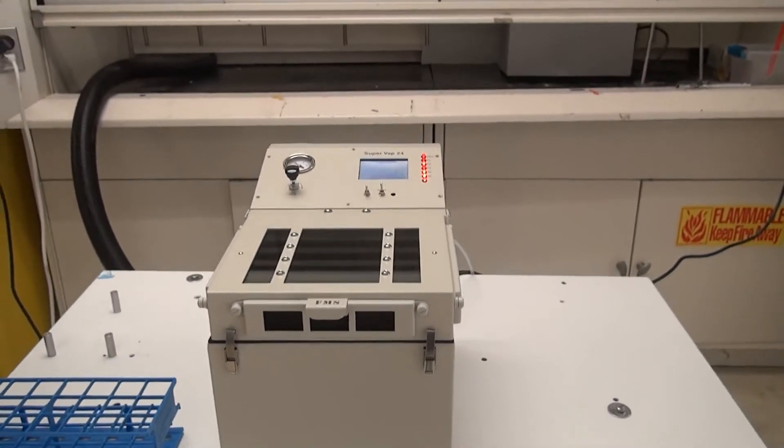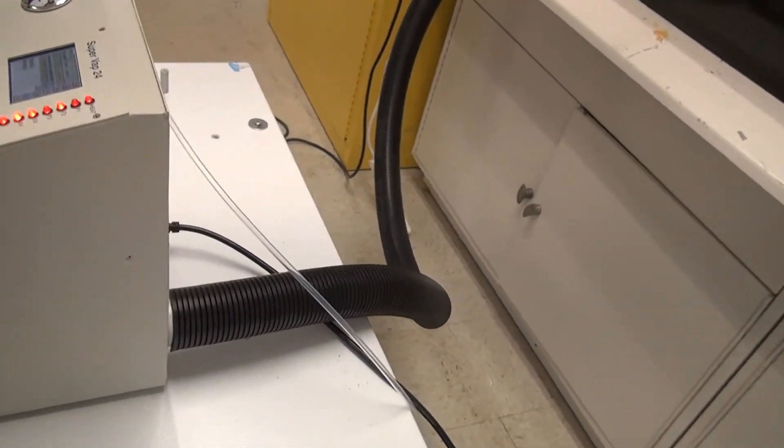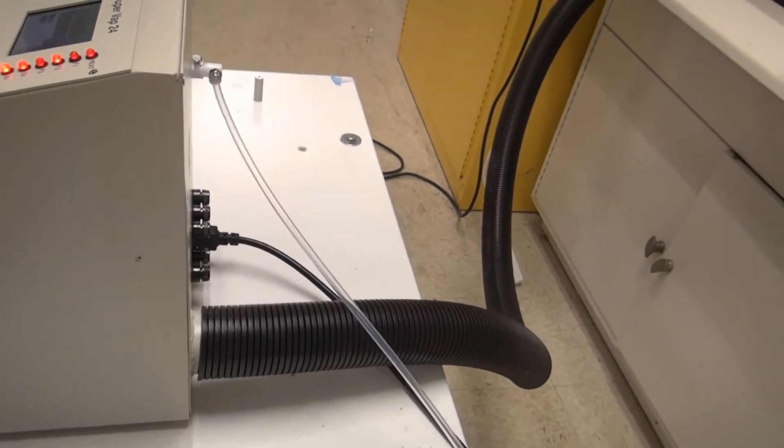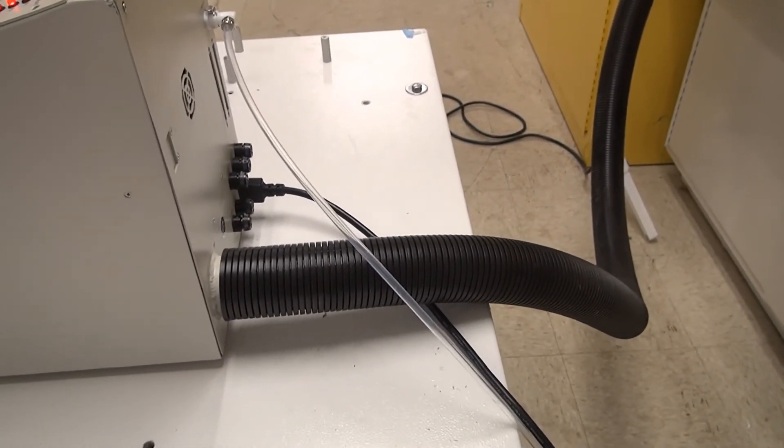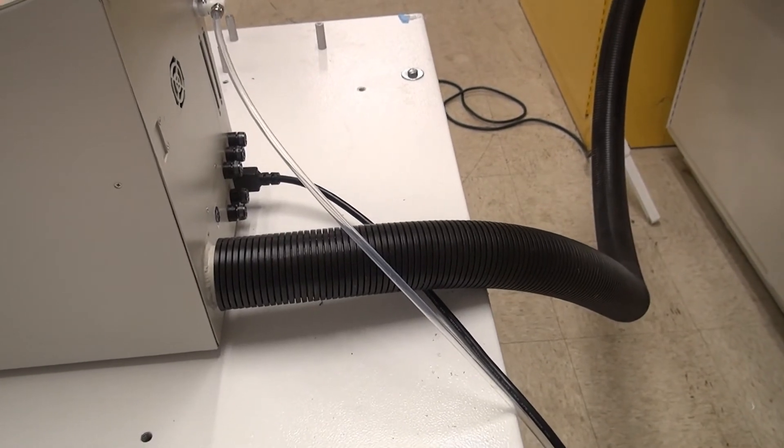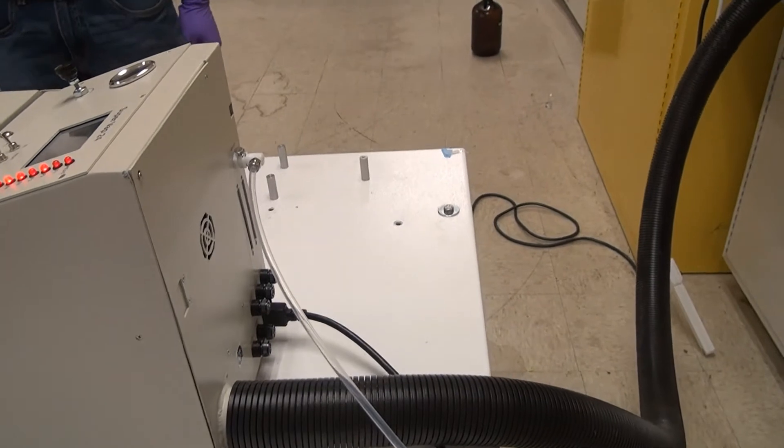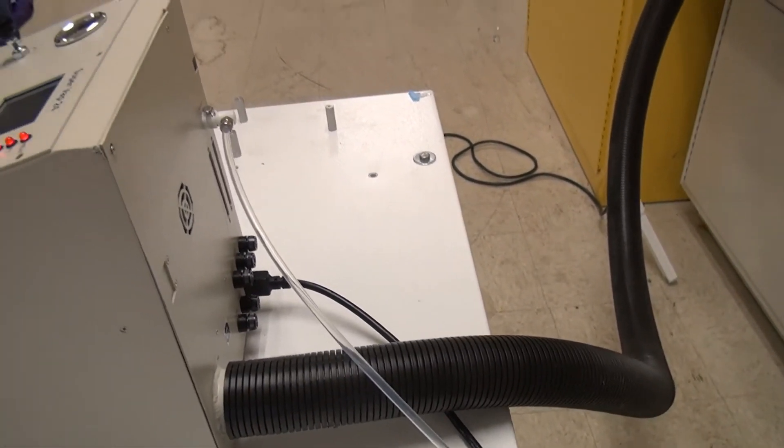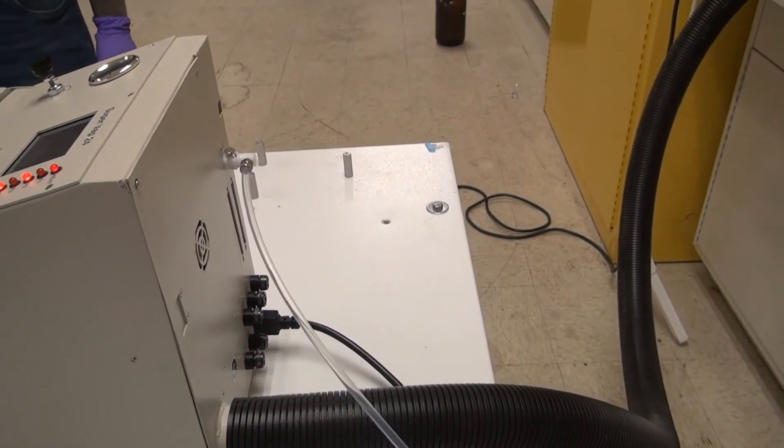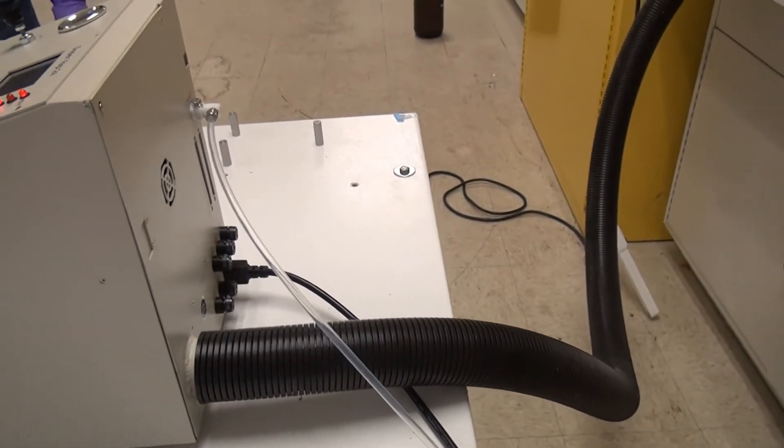I'm going to show you the back of the instrument quickly here and as you can see this can be run completely outside of the hood. There's a nice exhaust fan there with a very powerful exhaust fan with an exhaust hose that comes with the system. This is a quick disconnect nitrogen fitting, so your nitrogen you want coming into that at 40 and then just here, power switch in the back.